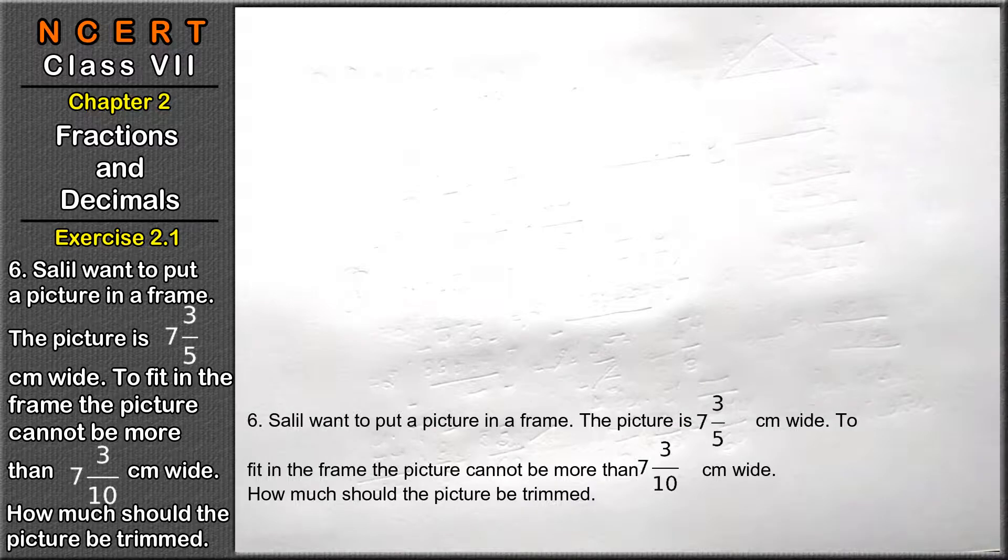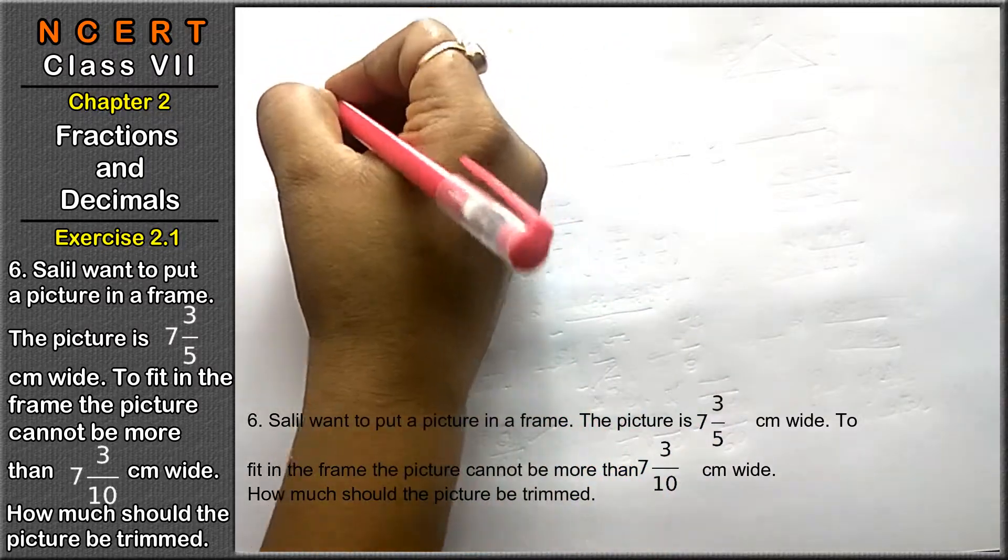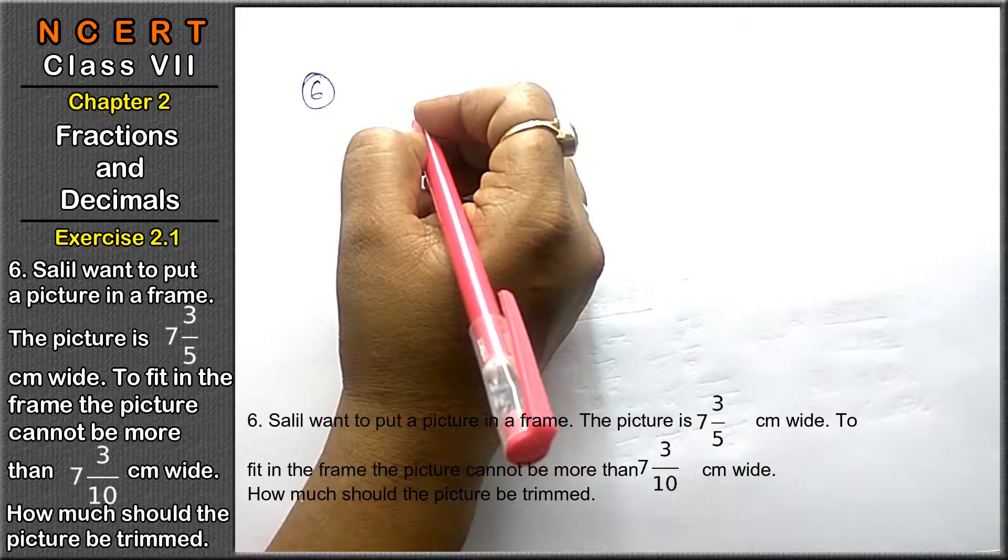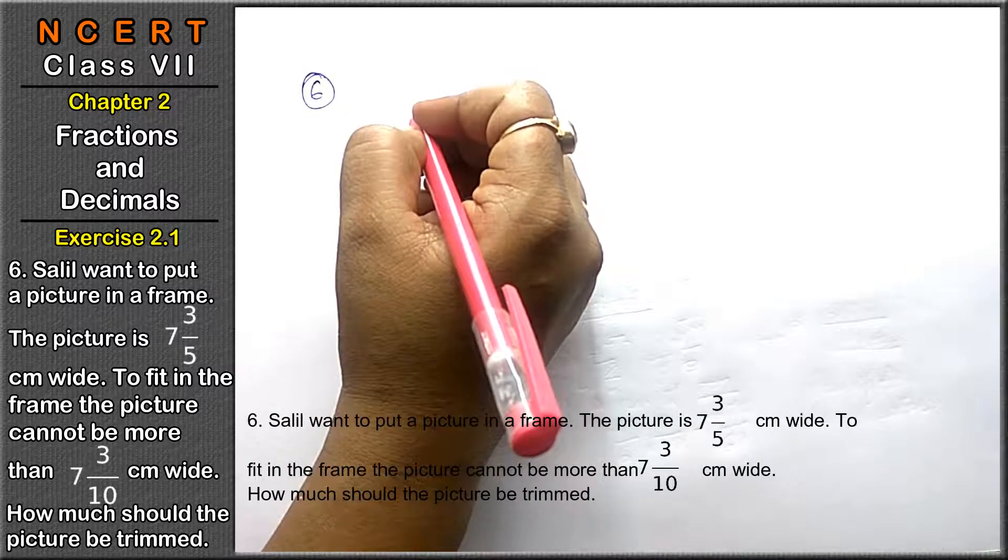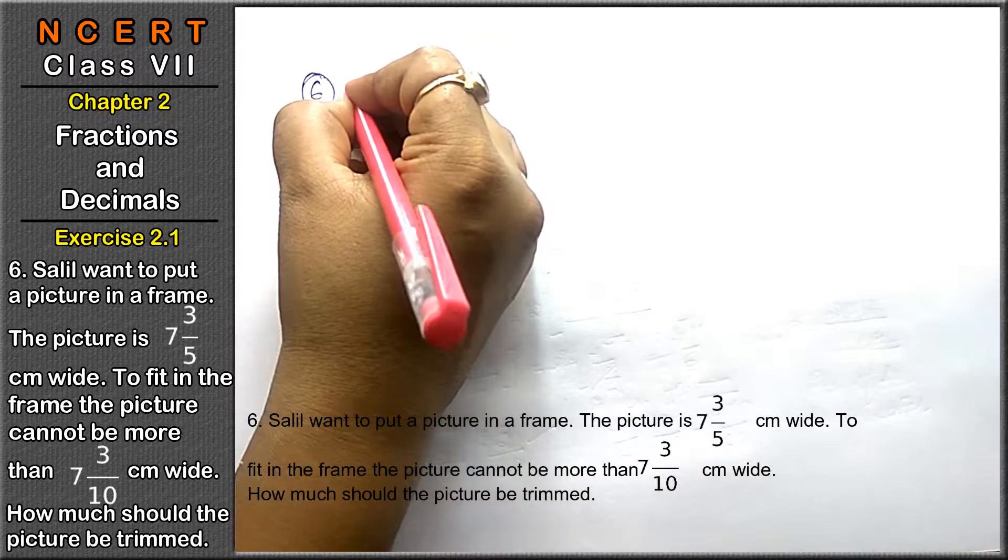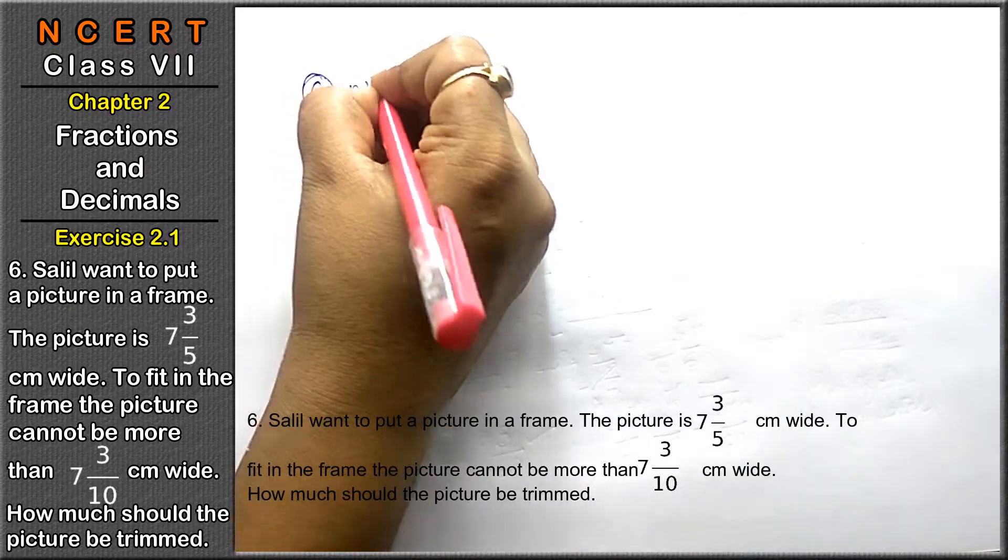Hello friends, welcome to Learn Maths. Today we will do Chapter number 2, Fractions and Decimals, and question number 6, 7, and 8 of the first exercise, that is Exercise number 2.1. Let's see question number 6. In this, Salil wants to put a picture in a frame. The picture is 7 whole 3 upon 5 centimeter wide.